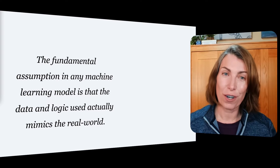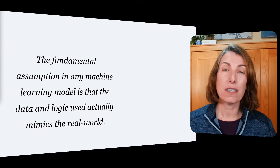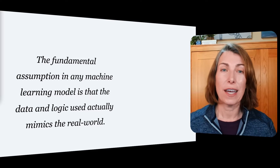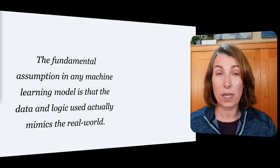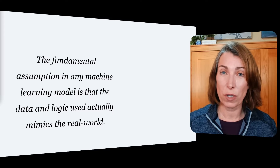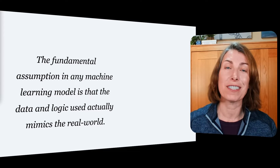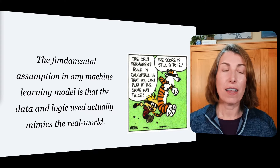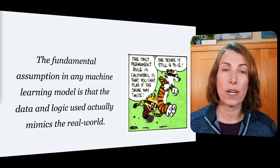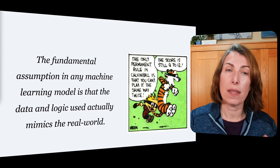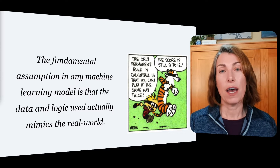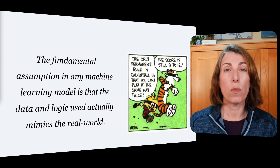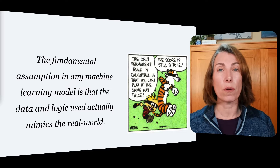I like to start with fundamentals or basic principles. The assumption when we do machine learning is that the data and the logic we're using for training somehow mimics the real world. If we didn't believe that, we wouldn't have a lot of faith in our predictions, and hopefully we wouldn't be putting our models into production. Unfortunately, the real world tends to change on us — sometimes quite quickly, sometimes gradually. When that happens, the training data, which was static, can be very different than what's happening in the real world, whether there was actually a data issue or whether the fundamentals changed.